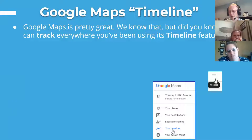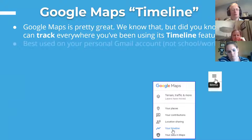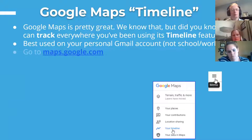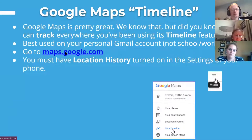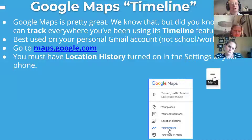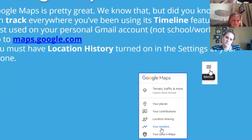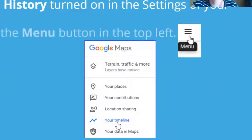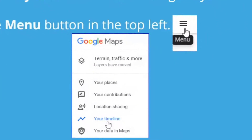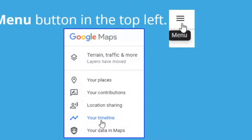The next one is a lesser known feature of Google Maps. Most people use Google Maps and are pretty familiar with it. You can always go to maps.google.com. You must have your location history turned on in your settings on your phone. But in Google Maps, click on the menu button in the top left.